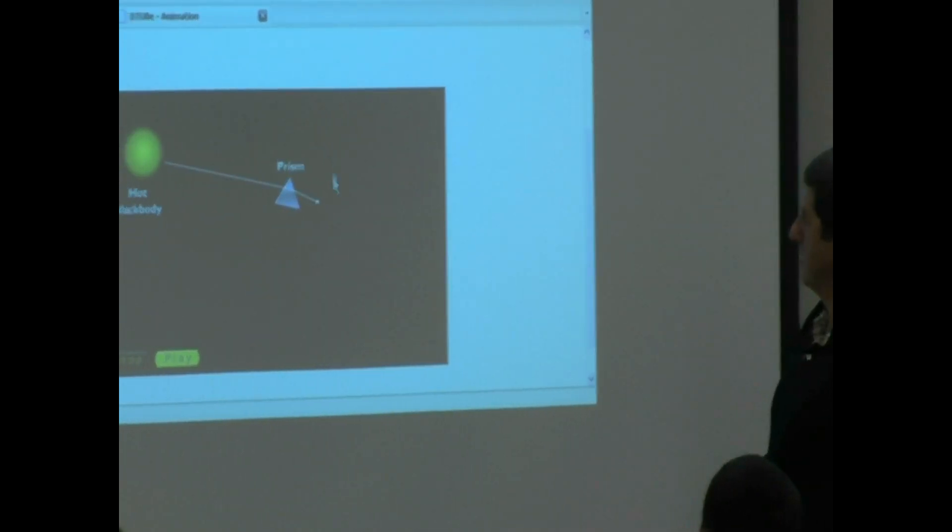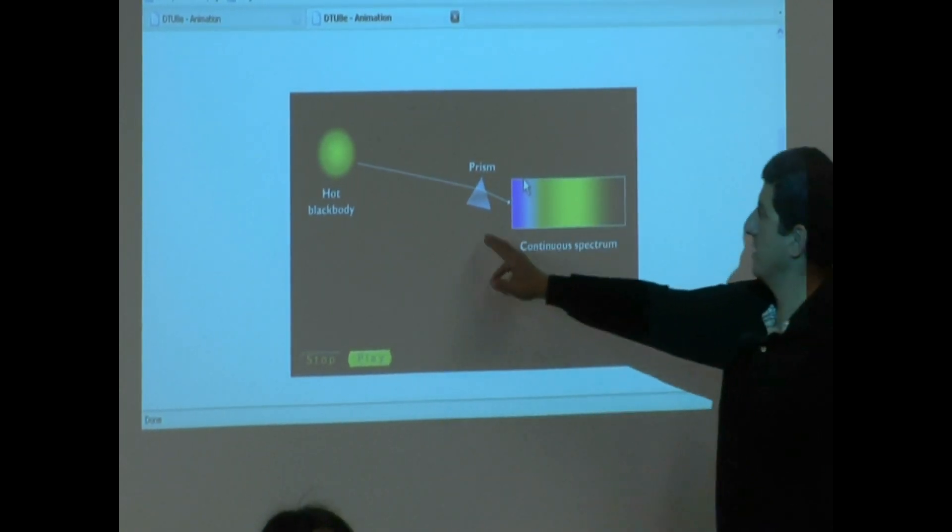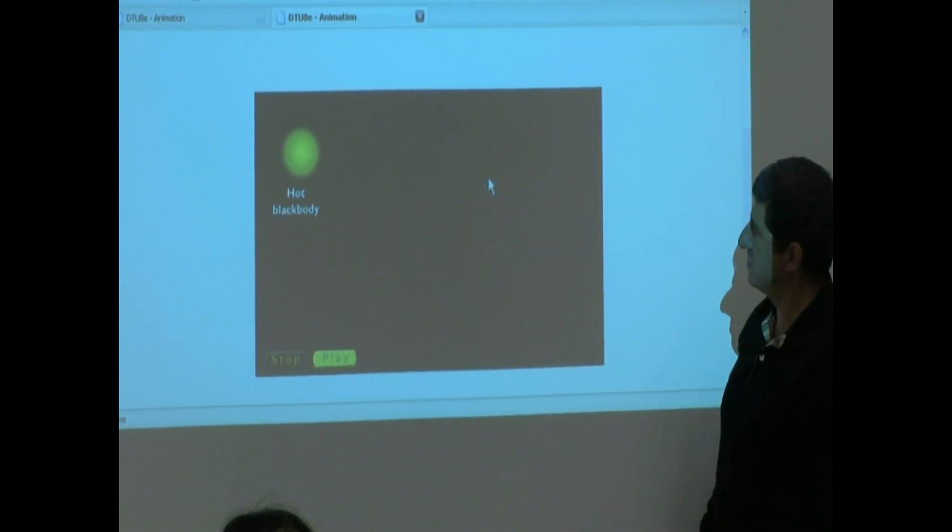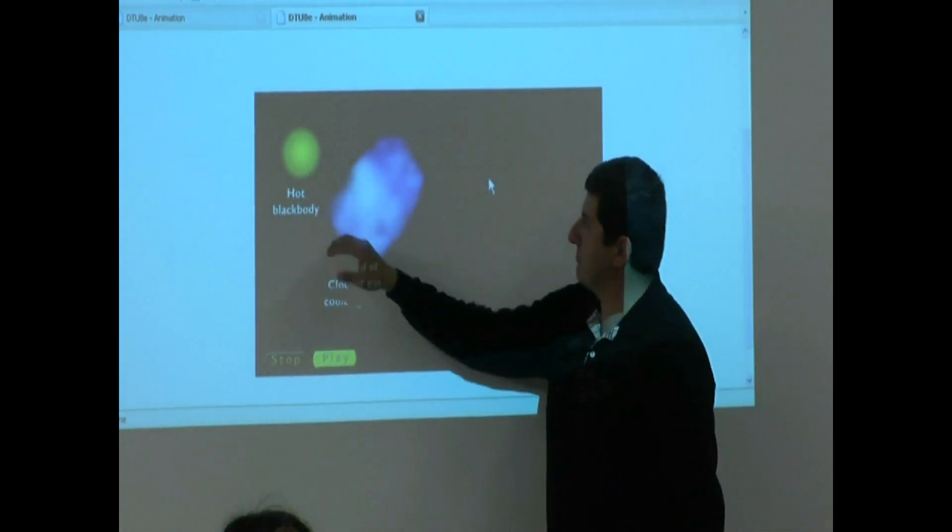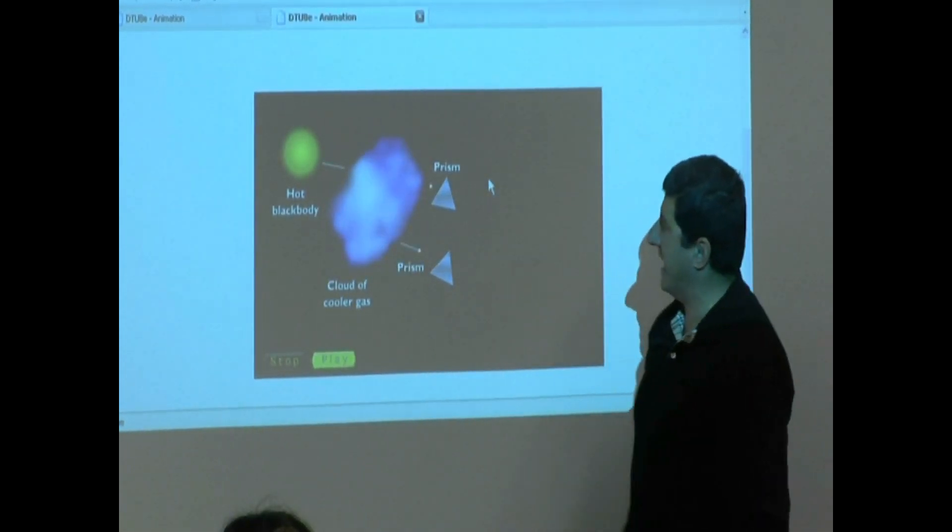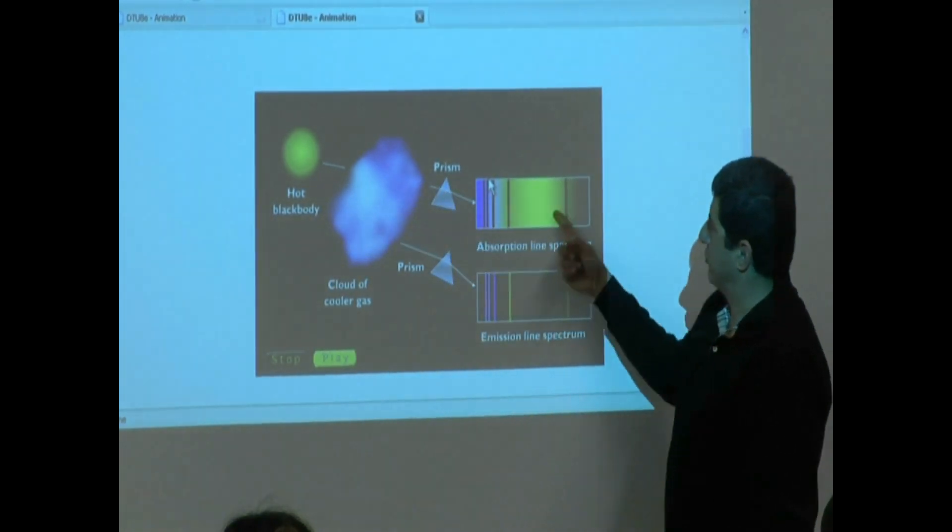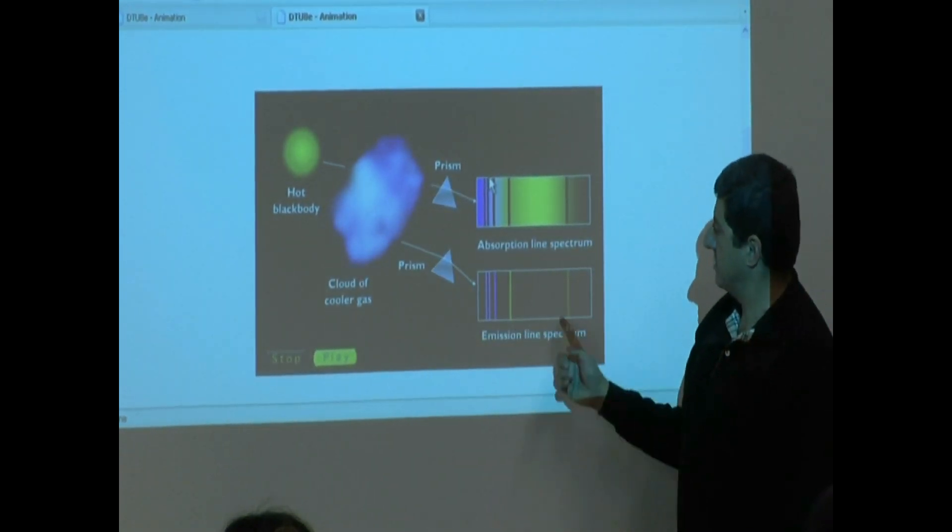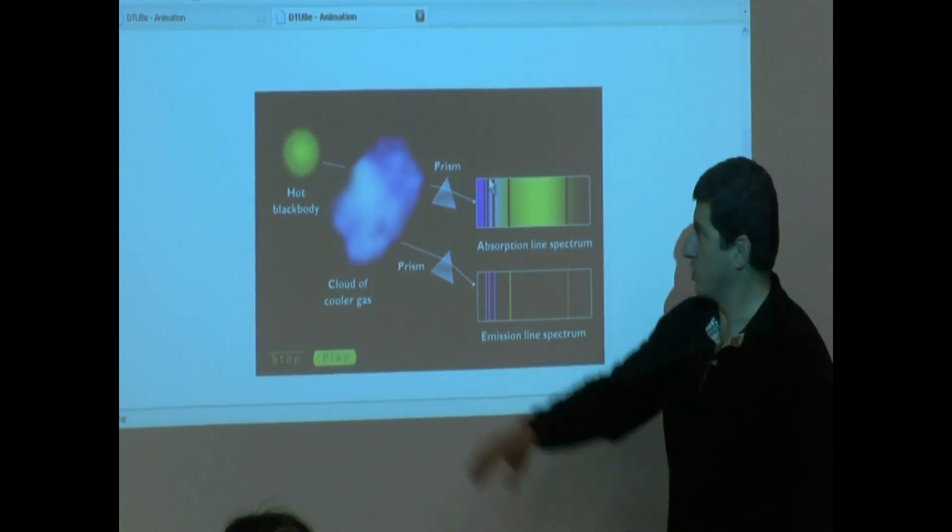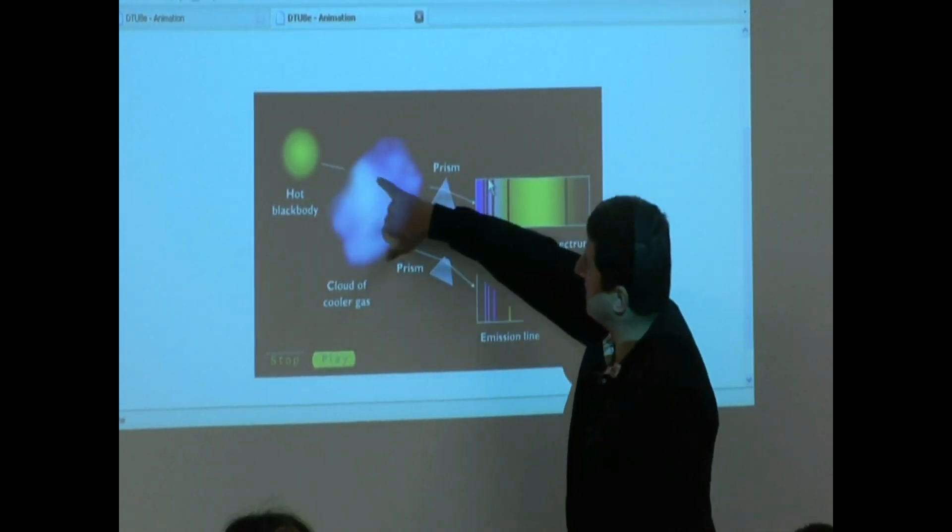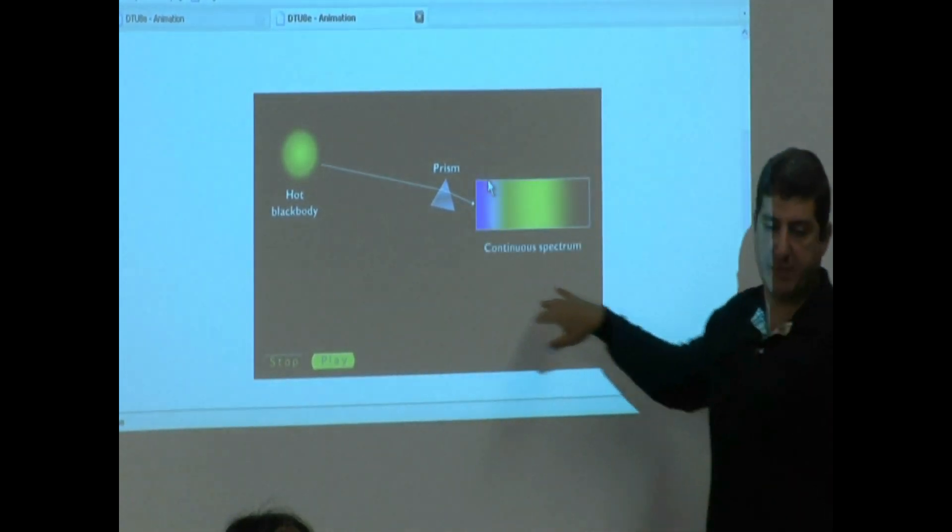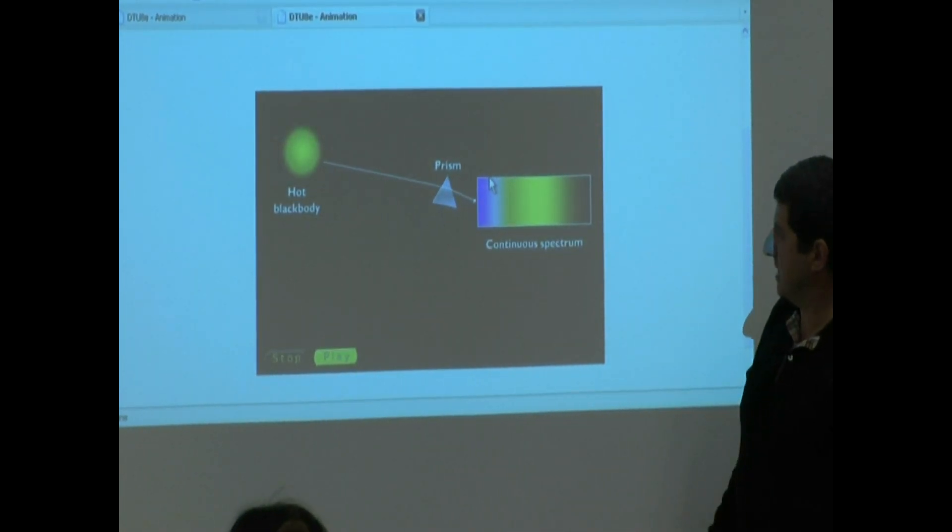See a movie again. So if it's a hot object, solid object, continuous spectra. If the hot solid object and in front of it there is a gas, absorption. If the gas itself is the one emitting the energy, it's emission. You see, if the hot object is emitting it and it's going through a gas, it's absorption. If the gas itself is emitting it, it's emission.